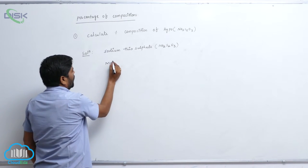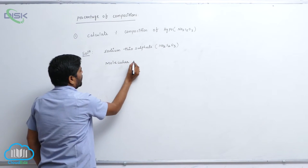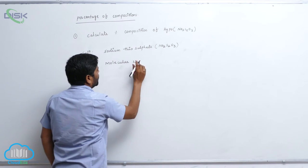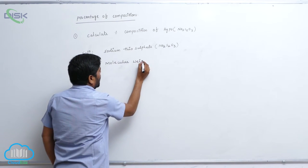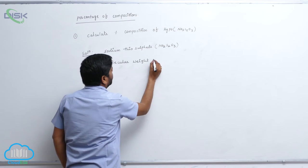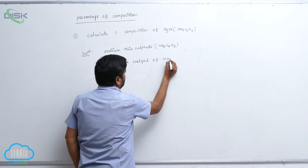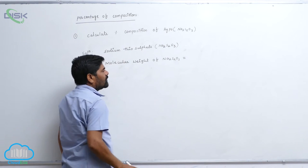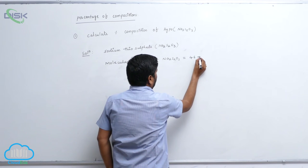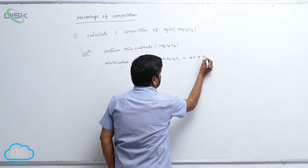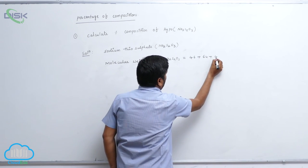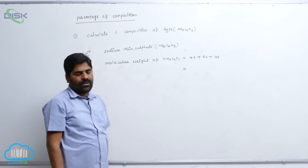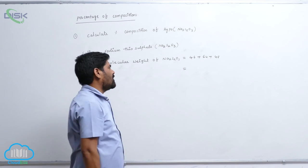Molecular weight of Sodium Thiosulfate is: 46 plus 32, means 64, plus 48 — total how many grams? It is 156 grams.